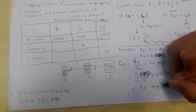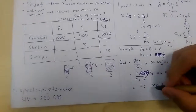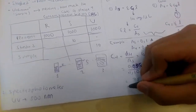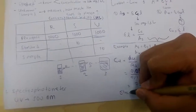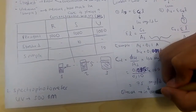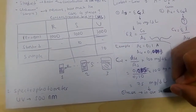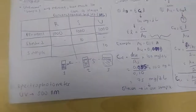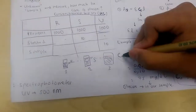The result gives us the glucose concentration in our unknown sample. This is CU — the concentration of glucose in the unknown sample.